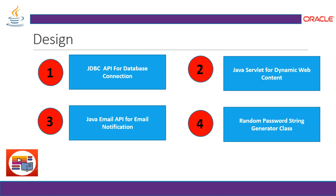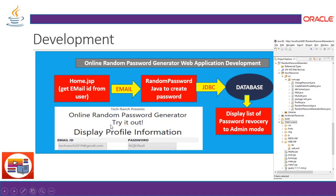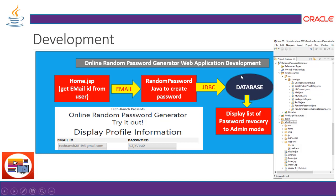We also need a class file that creates a random password string. Looking at the application structure for the Online Random Password Generator web application: the flow starts from home.jsp, where the user provides their email ID. That email ID is sent, stored in the database, and a random password is created and associated with it. Both the email and password are stored in the database using the JDBC API.